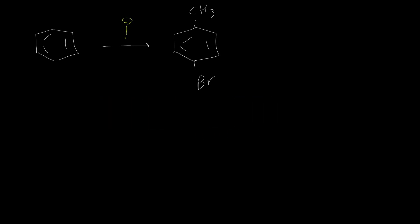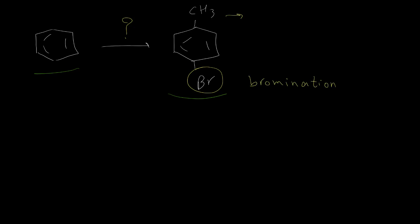For the first problem, let's say I would like to synthesize 4-bromo-toluene from benzene. We should perform two different reactions: bromination of the benzene ring to put a bromine atom, and also a Friedel-Crafts reaction. Let's see what happens if we change the sequence of the reactions.